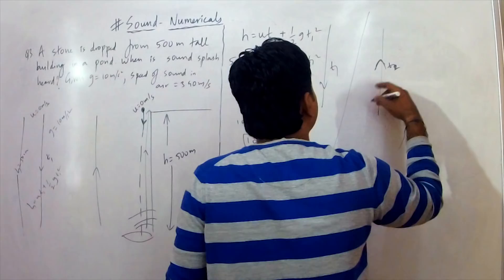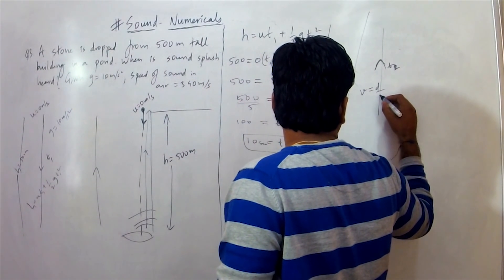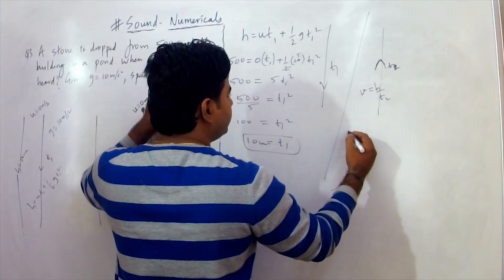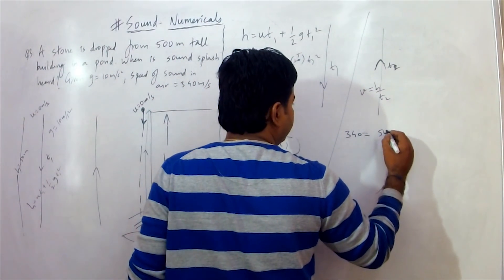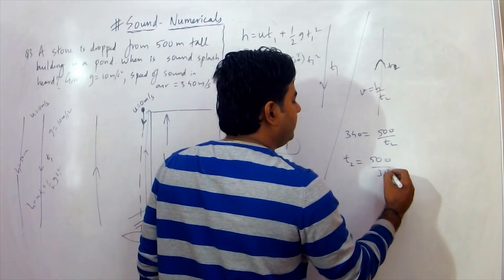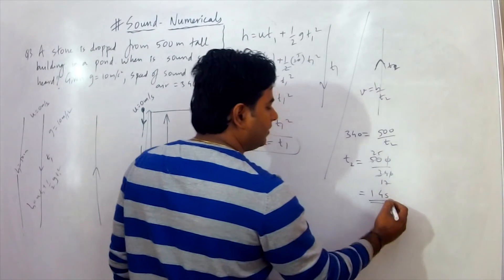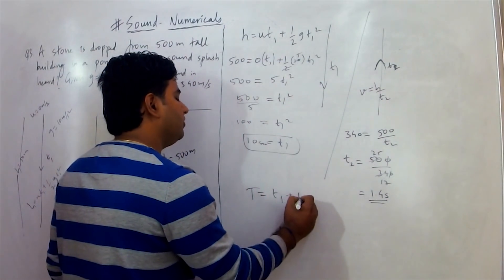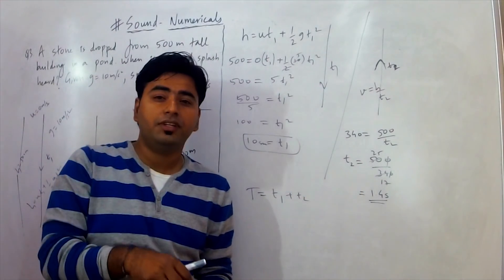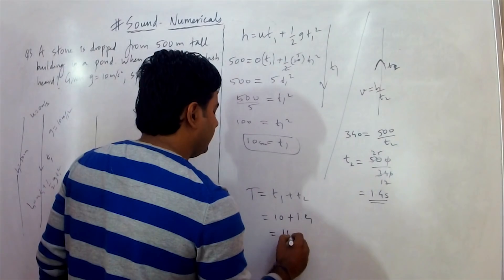For the sound returning, there is no acceleration. We use speed = distance / time. Speed of sound is 340 m/s, distance is 500 meters. So T2 = 500/340 ≈ 1.47 seconds, approximately 1.4 seconds. Therefore, the total time is T1 + T2 = 10 + 1.4 = 11.4 seconds.